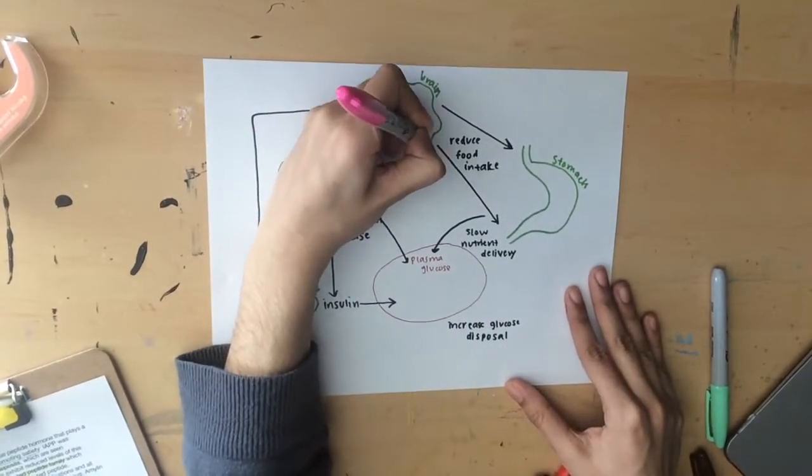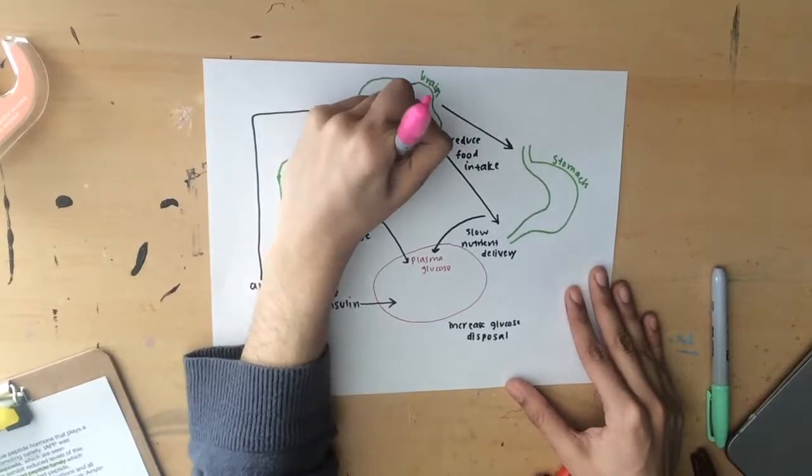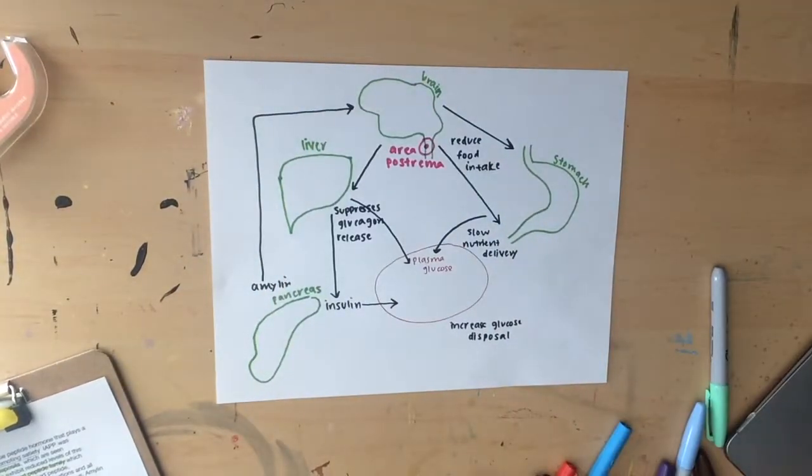The anorectic effect of IAPP appears to be mediated via a glucose-sensitive part of the brainstem, the area postrema of the central nervous system.